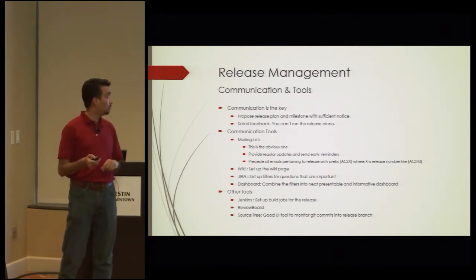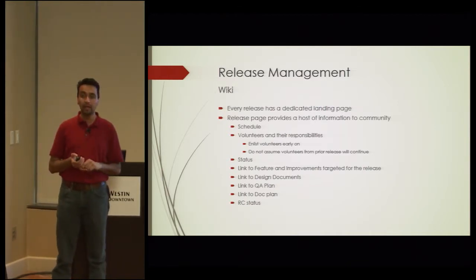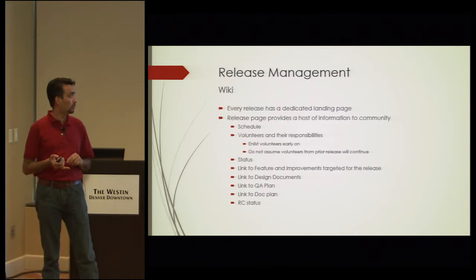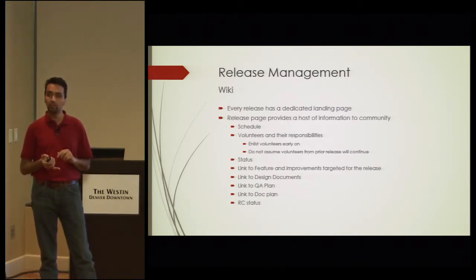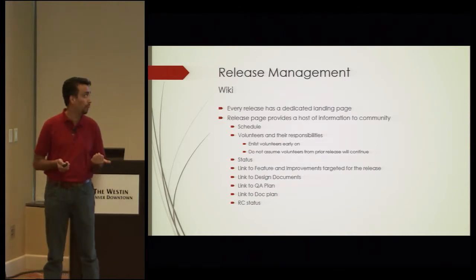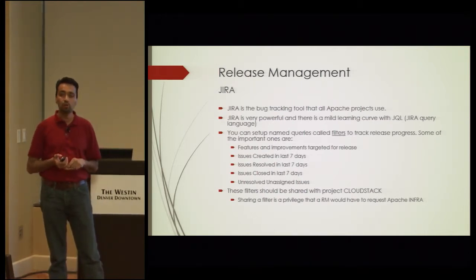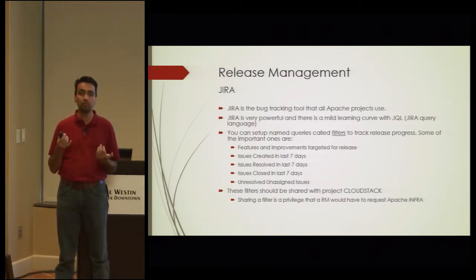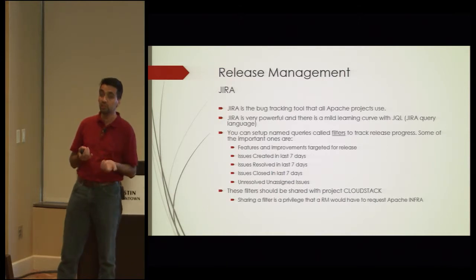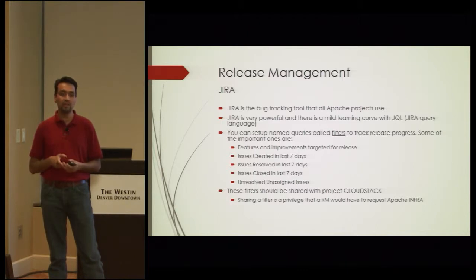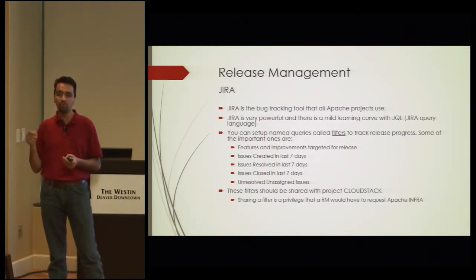Digging deeper into communication tools: the Wiki is our landing page, giving a snapshot of where we are in the release — schedule, volunteers, status, feature and design documents, doc plan, test plan, and RC status. Jira, I would say, is the most important tool for any release manager, because this is where all your bug database, features, and issues live. You have to get comfortable with the Jira Query Language — it's very close to SQL but not exactly — and it's the tool you use to find answers, like who moved an issue out of this release when it shouldn't have been.